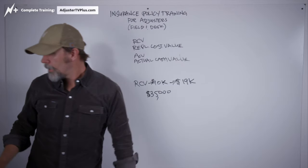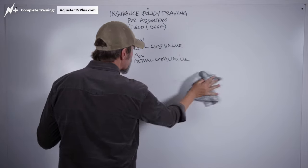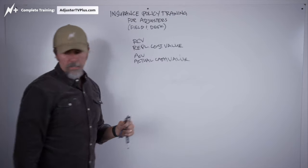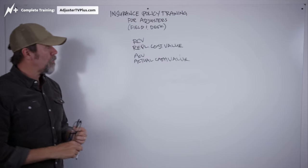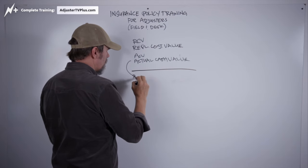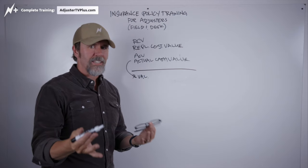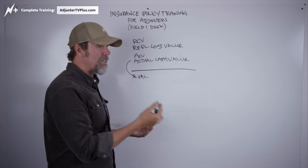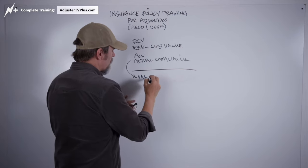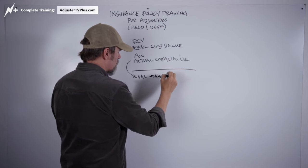The actual cash value is, a lot of different ways to describe this. I think one way that kind of makes sense to a lot of people is to say that this is the value of the item as it exists on the house right now, based on its age and condition. Value, age, condition.